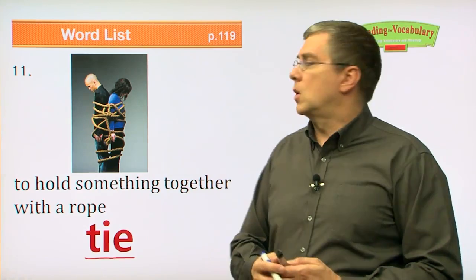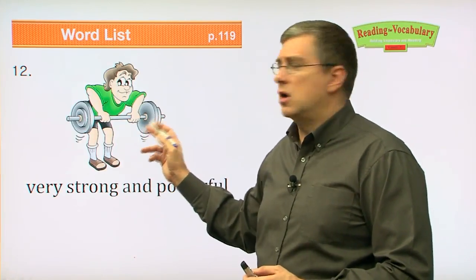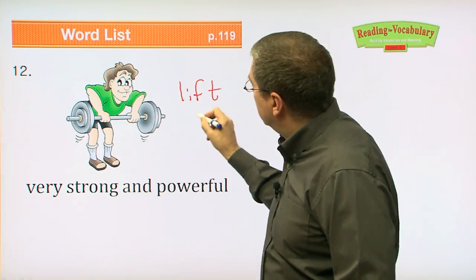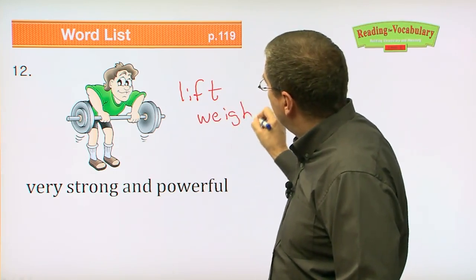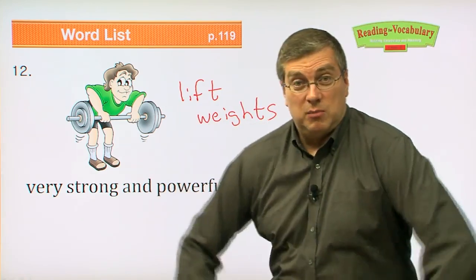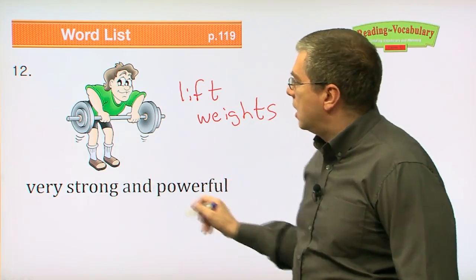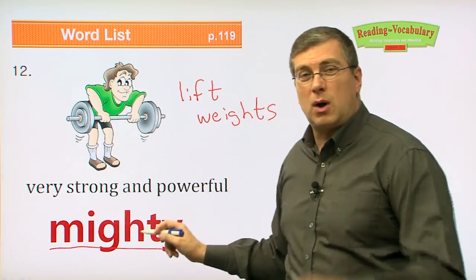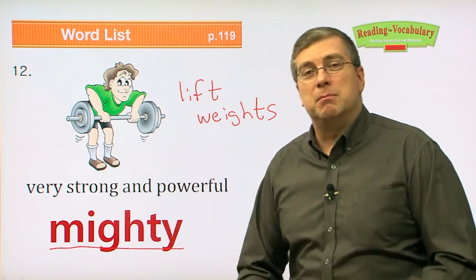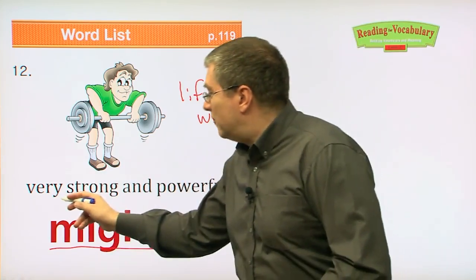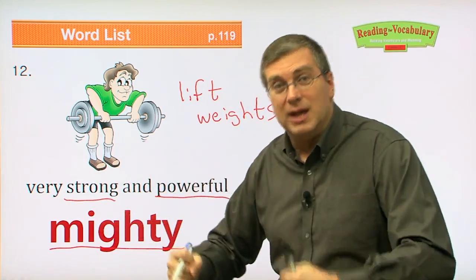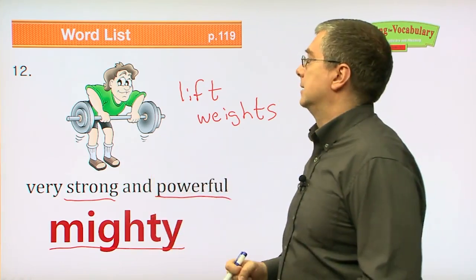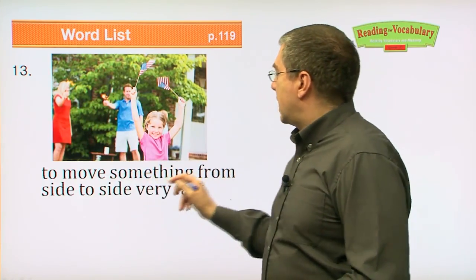Next one — whoa, look at that strong person! Do you lift weights? This person is lifting weights — to lift weights — and you get very big muscles. Very strong and powerful. Another word for this is mighty. We saw this word before on the title: Mighty Paul Bunyan. So it means Paul Bunyan the imaginary character is very strong and powerful. He can do many things with his body because he's really strong.